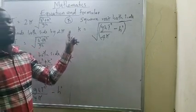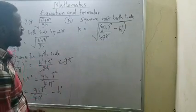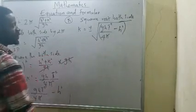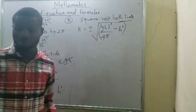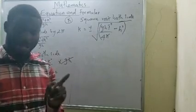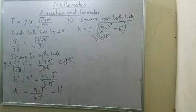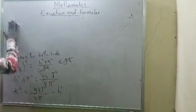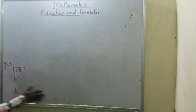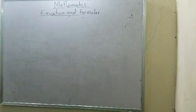It is good to put plus or minus when square-rooting both sides, because that is the logic behind quadratic equations. Anytime you solve a quadratic equation, you always arrive at two possible values. So k = ±√[ghT²/(4π²) − h²]. This ensures k is truly the subject, not k² or minus k.